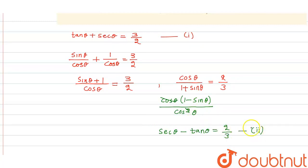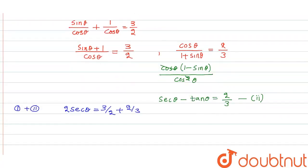Now what we do is add equation first and equation second. So 1 plus 2, that will be 2 sec θ. 2 sec θ is equal to 3 by 2 plus 2 by 3. The LCM is 6 and this is 9 plus 4, that means 2 sec θ is equal to 13 by 6. That means sec θ is 13 by 12.